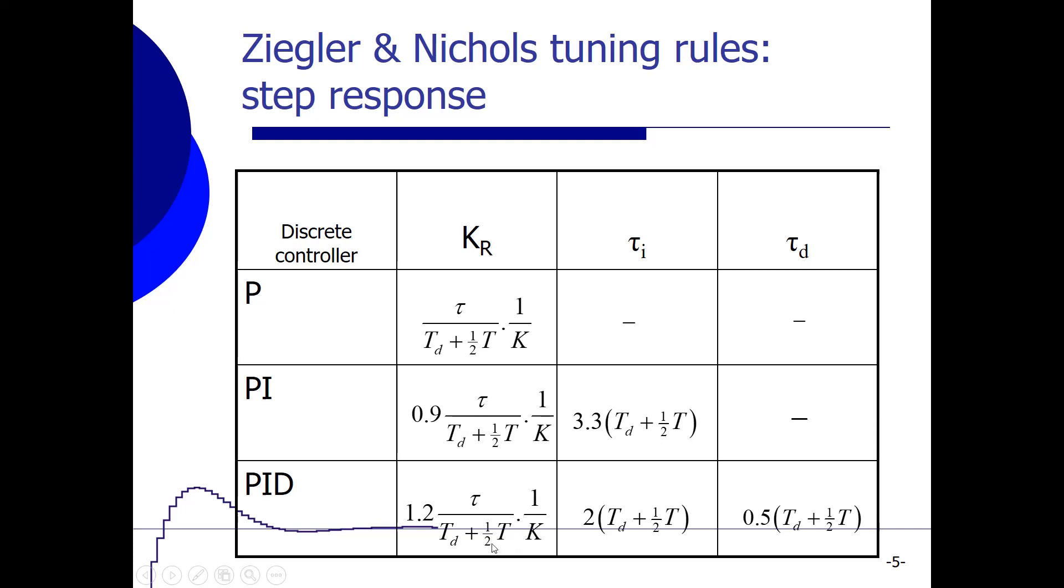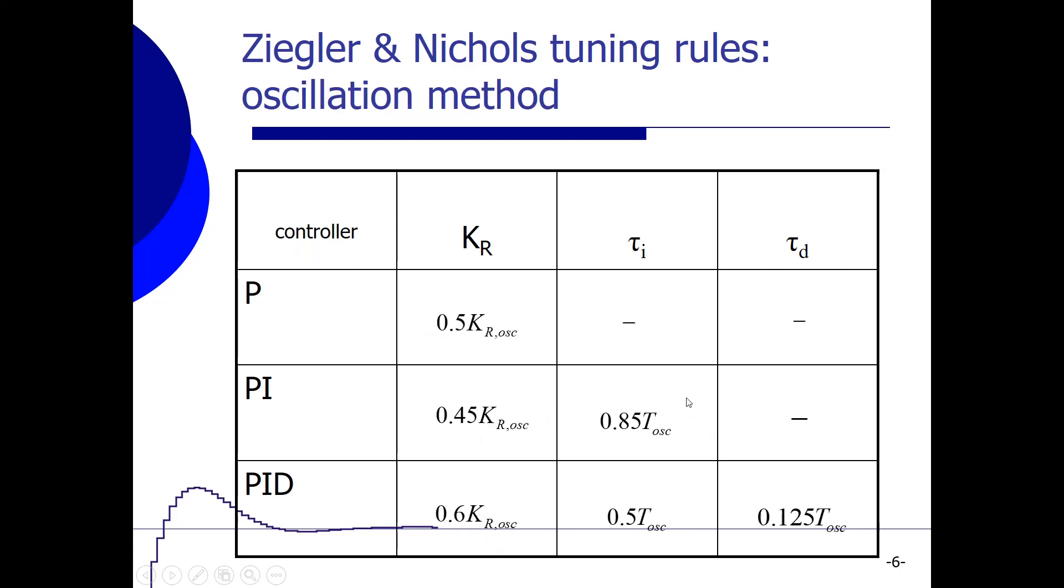So now we have tuned our controller, and when this is not an appropriate method, then we can still use the oscillation method, which we also discussed in that video about Ziegler and Nichols. And all the parameters over here are the same as in the continuous time controller.